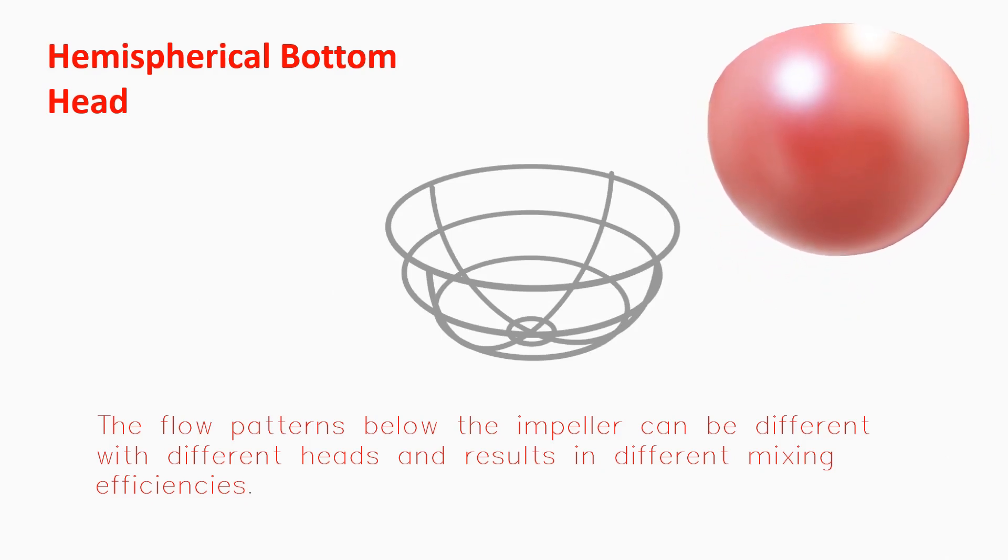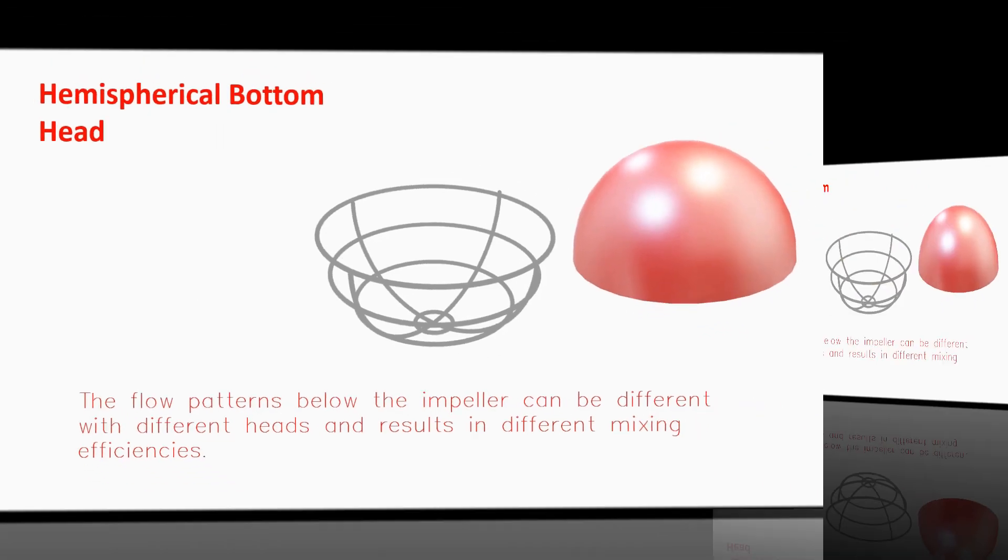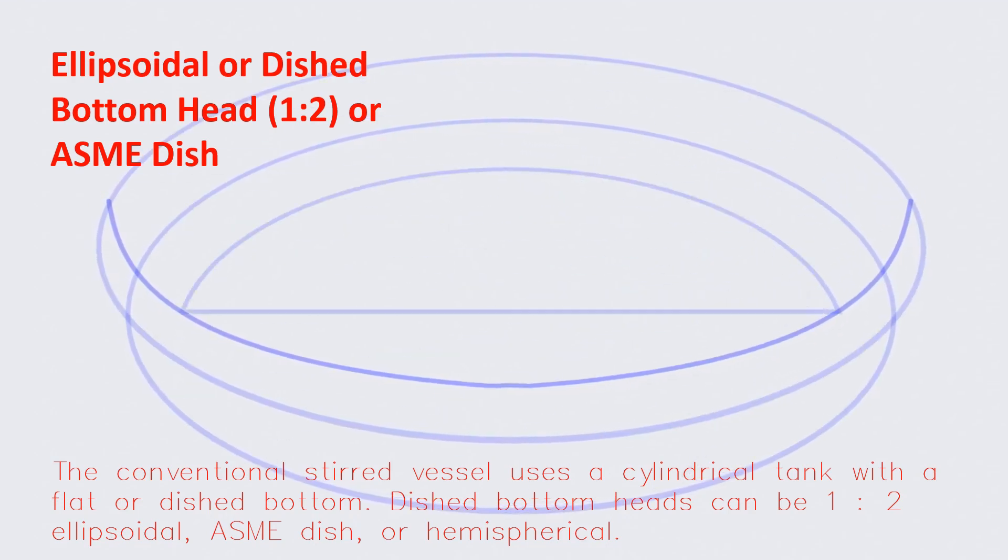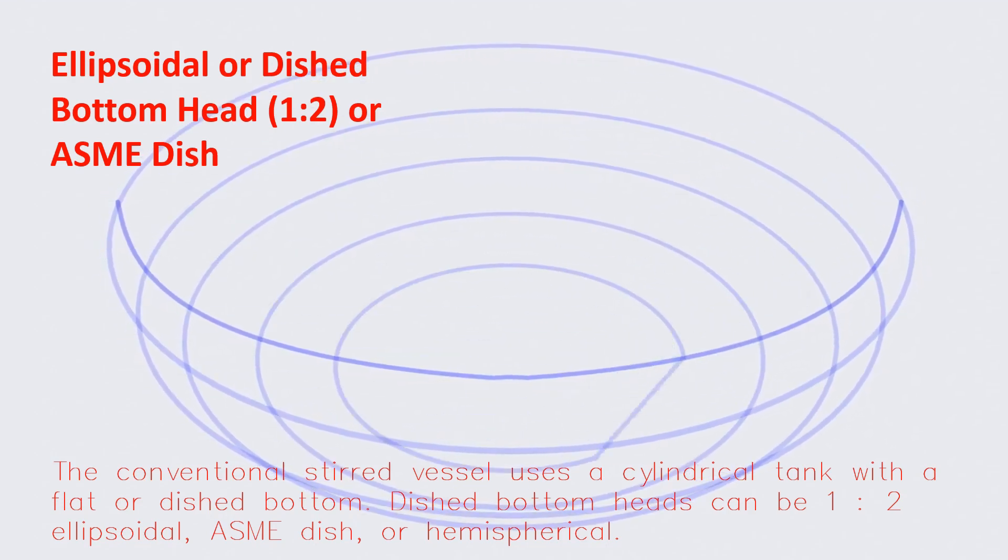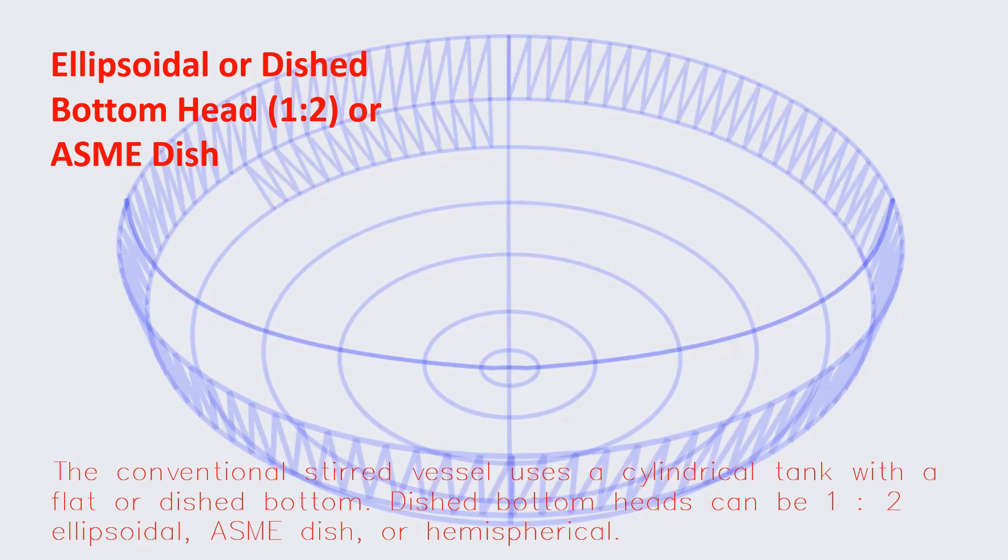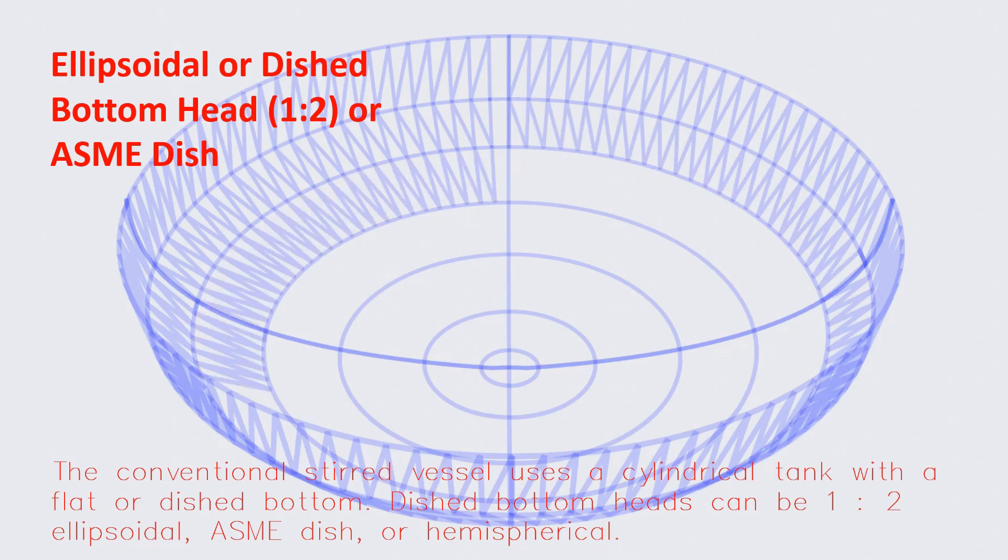So the selection of bottom head is a very important aspect and consideration in the design of mixing vessels. The bottom of the tank may be flat, dished, or hemispherical. On the other side, dished bottom heads can be designed as 1:2 ratio ellipsoidal or dish design according to ASME code.